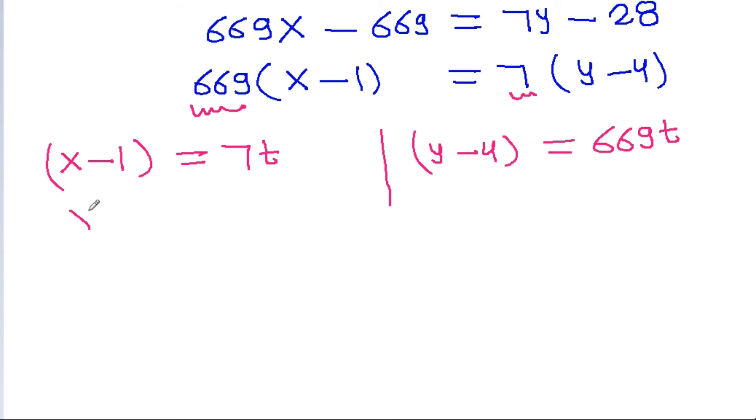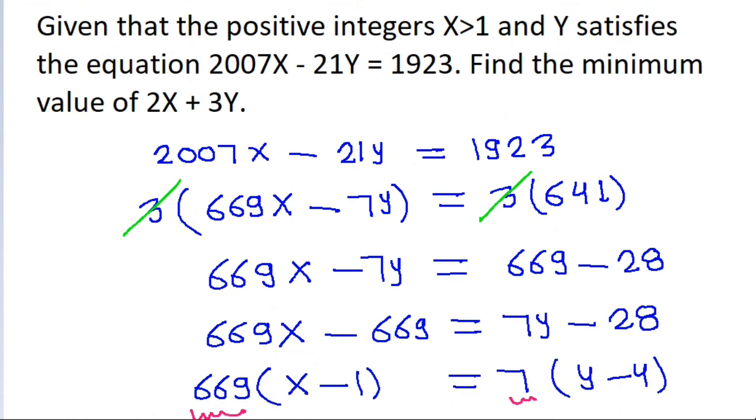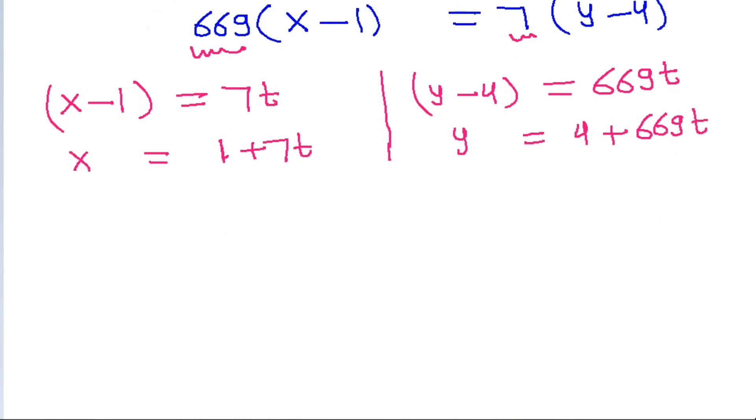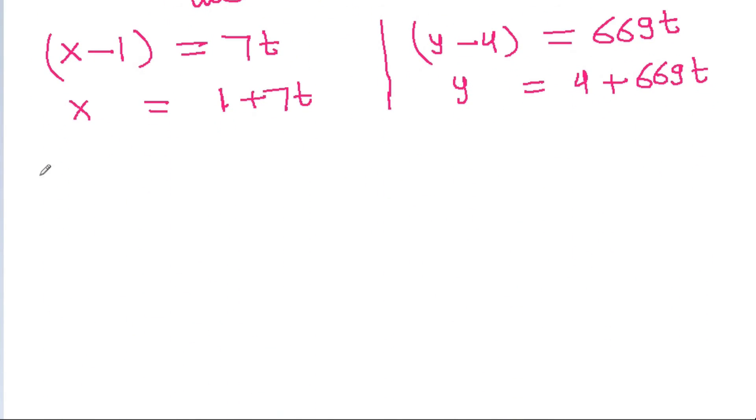And from here we get x is 1 plus 7t, y is equal to 4 plus 669t, and we have given that x greater than 1. We have given that x greater than 1, that means t should be positive.